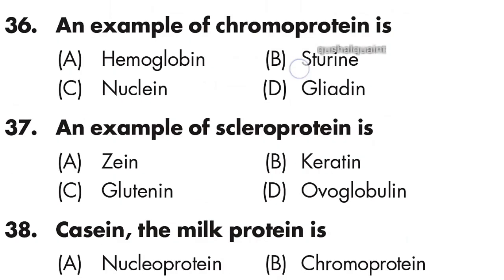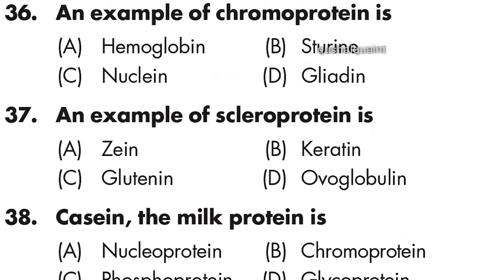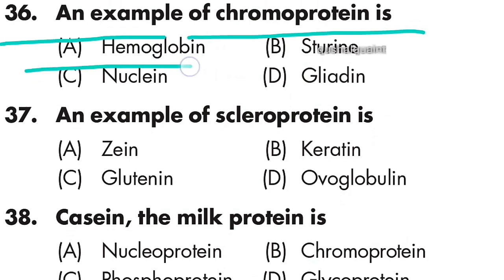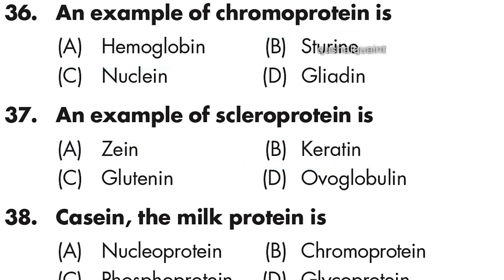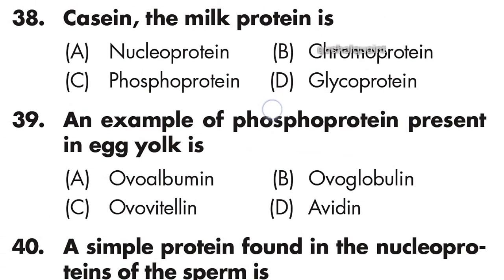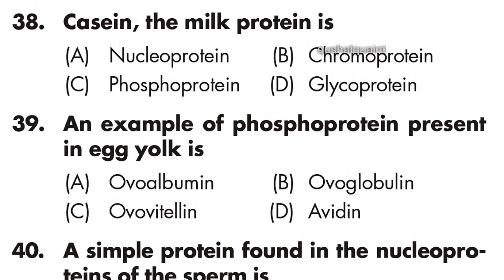Question 36: An example of a chromoprotein is — option A is right — hemoglobin. Question 37: An example of a scleroprotein is — option B is right.